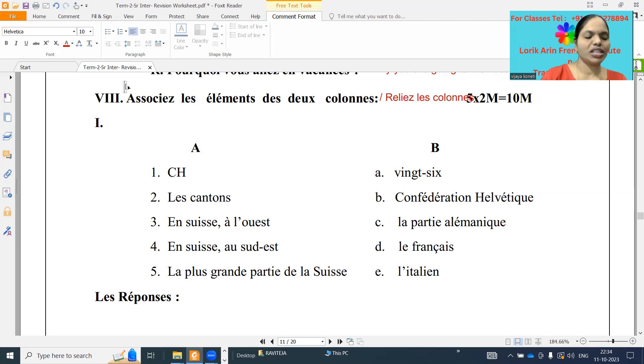Relier les colonnes, any way they can give. So what it is, associé means associate the elements of the two columns, or match the following, anything they can give.